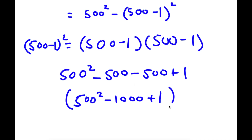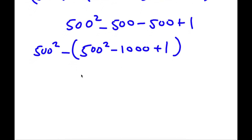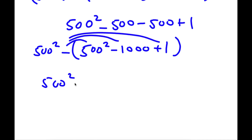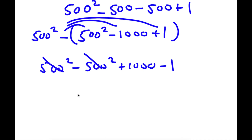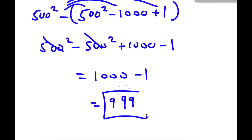Now that we've simplified this, we can bring in our 500 squared. So I have 500 squared minus 500 squared plus 1,000 minus 1. These two cancel out, and I'd be left with 1,000 minus 1. And 1,000 minus 1 is 999. So 999 is my answer.